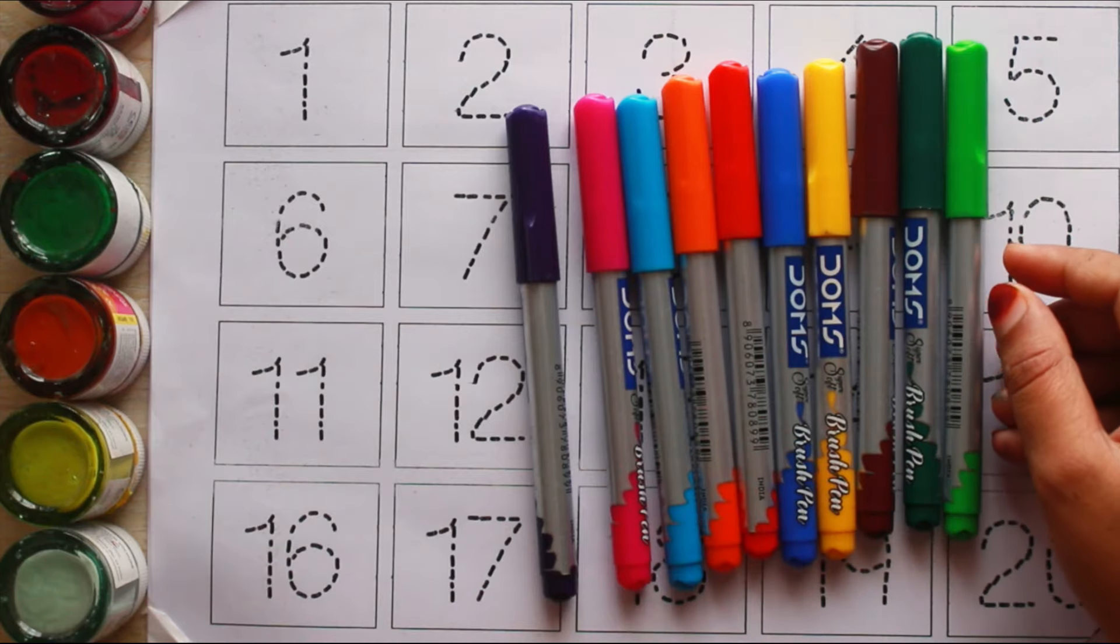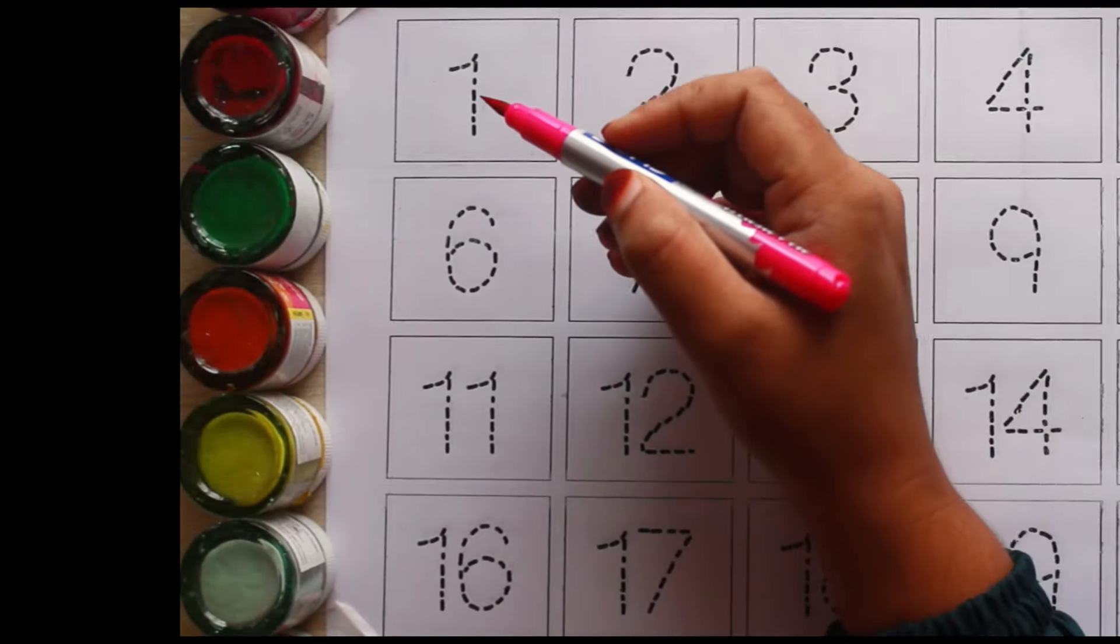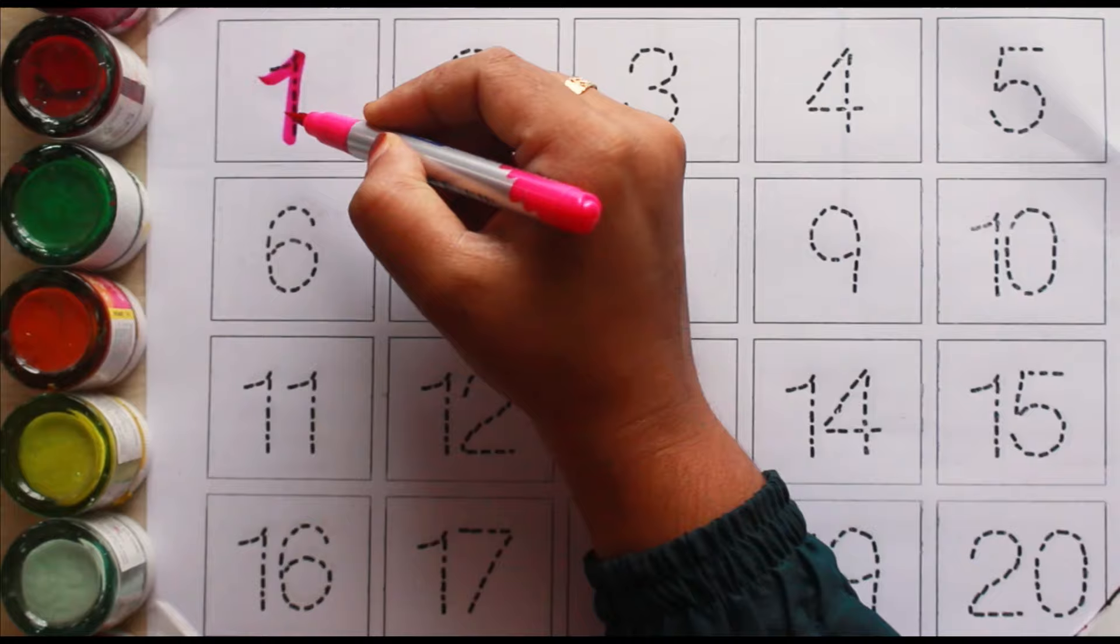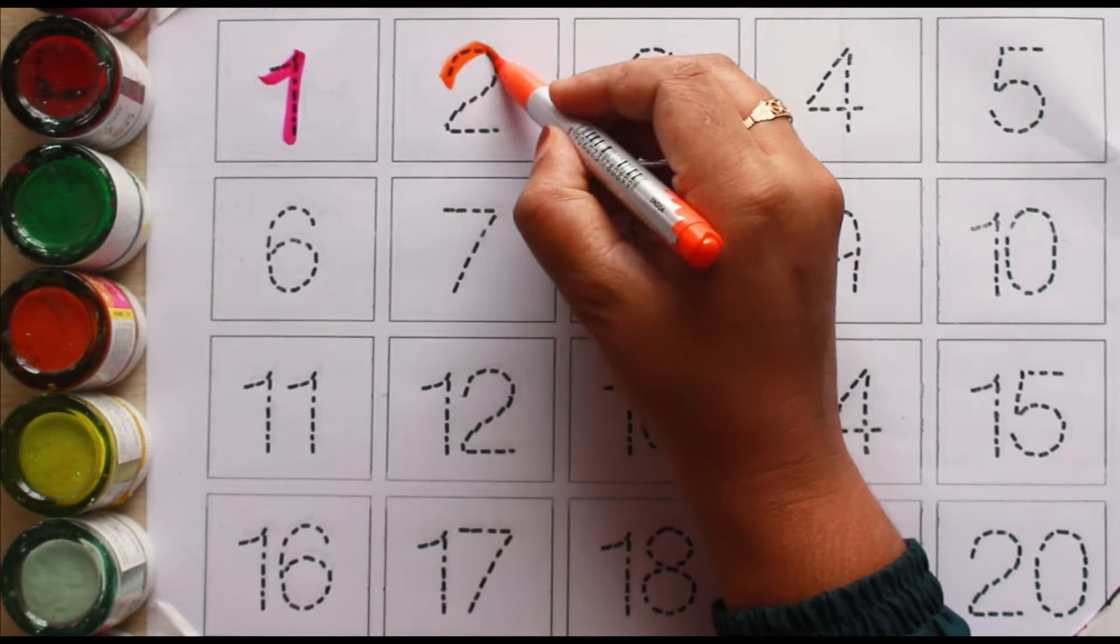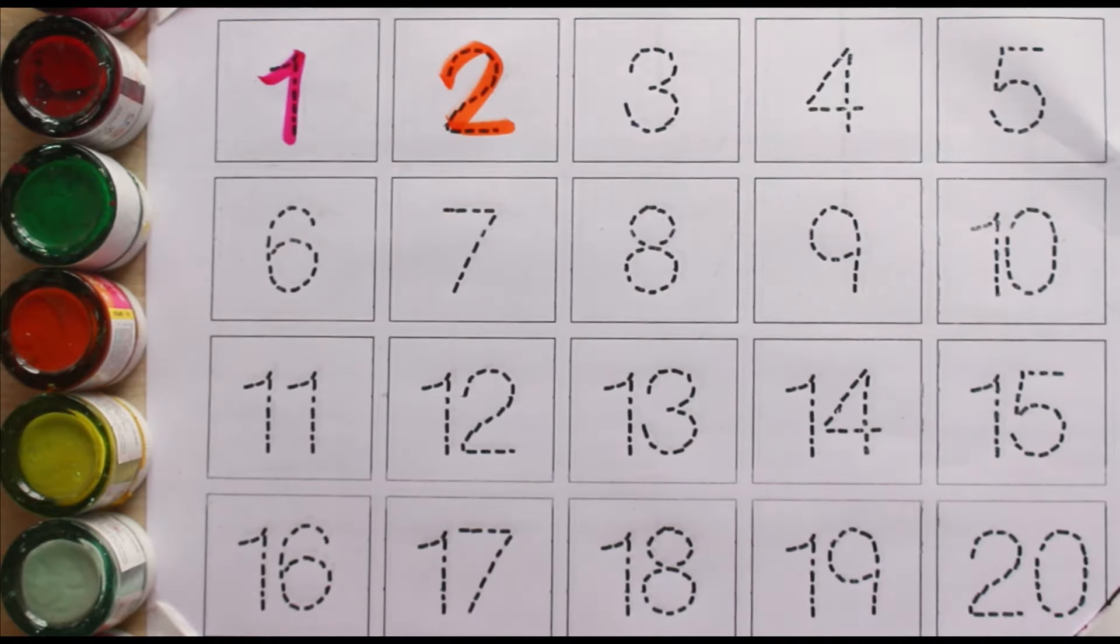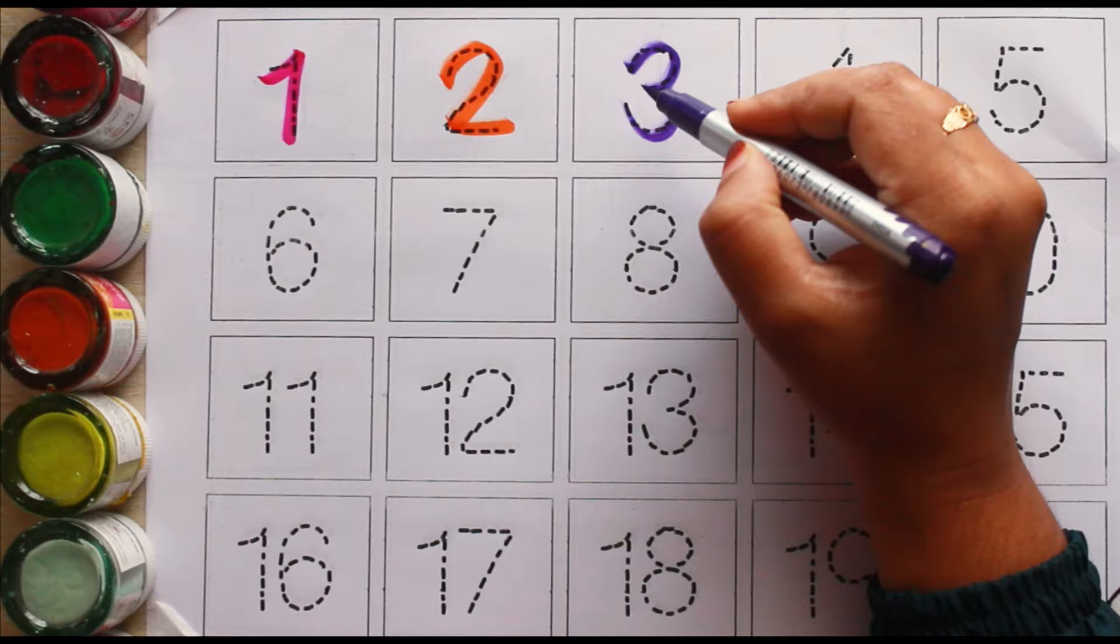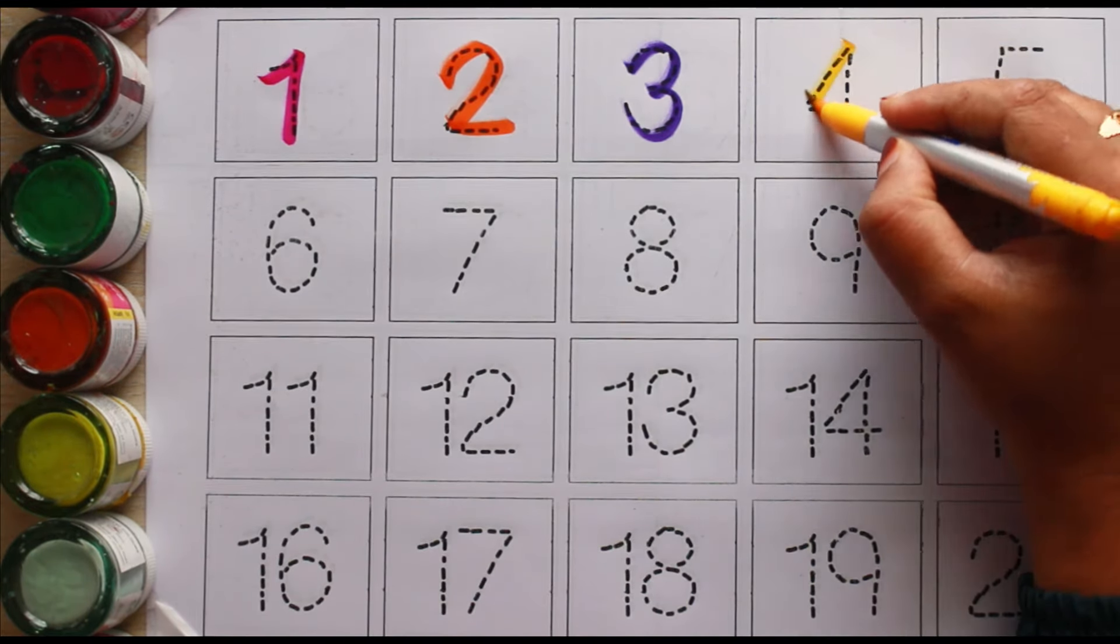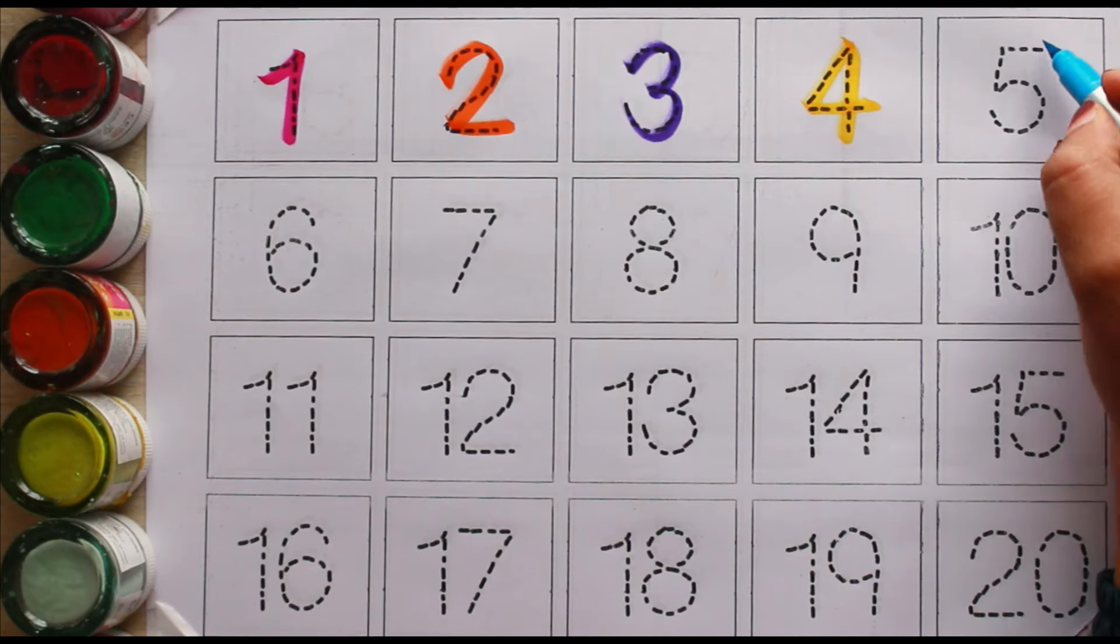Let's start. Pink color one, orange color two, violet color three, yellow color four, sky blue color five.